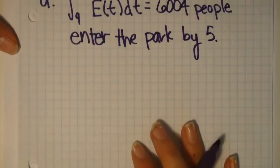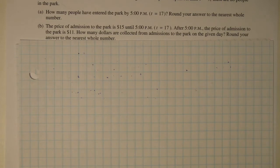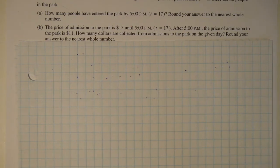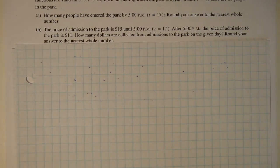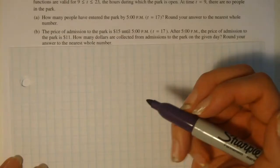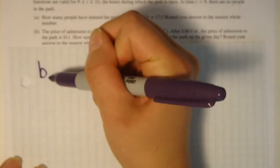Moving on to part B. B reads, the price of admission to the park is $15 until 5 pm. After 5, the price of admission to the park is $11. How many dollars are collected from admission to the park on the given day? Round your answer to the nearest whole number. For B we must also set up another integral. However, we have already solved half the problem by finishing part A.